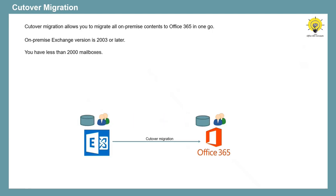So during the process of cutover migration, there will be two mailboxes for one user at the same time: the original Exchange mailbox stored in on-premise Exchange, and the copy of the user mailbox that is being migrated to Exchange Online.